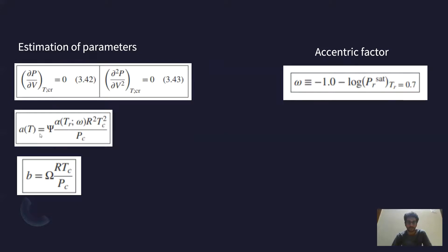The parameters a and b are dependent upon the critical parameters — the critical temperature and critical pressure. The constants Ψ and Ω are constants for a given equation of state. Sometimes a third parameter known as the acentric factor can also be used. The acentric factor is defined as: ω = −1 − log(Pr_sat) at Tr = 0.7. The acentric factor shows the deviation of a fluid from a normal fluid. Normal fluids are those for which the acentric factor is zero — for example, inert gases such as helium and neon.